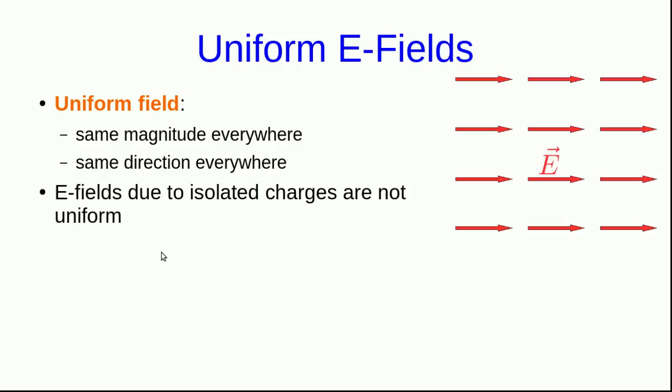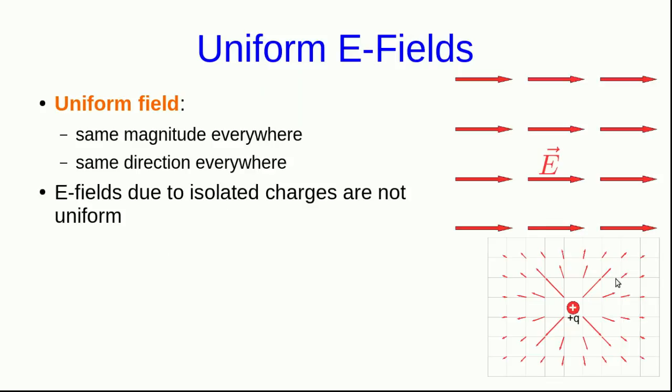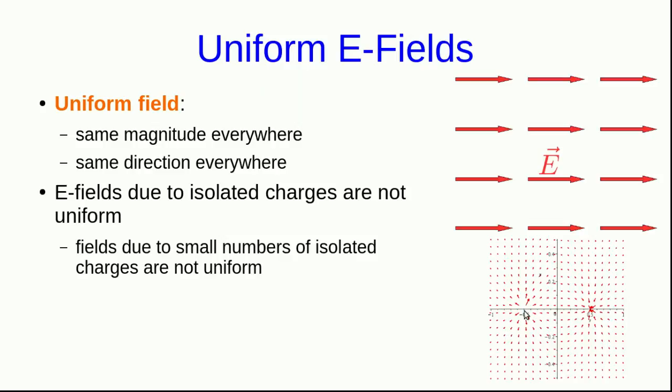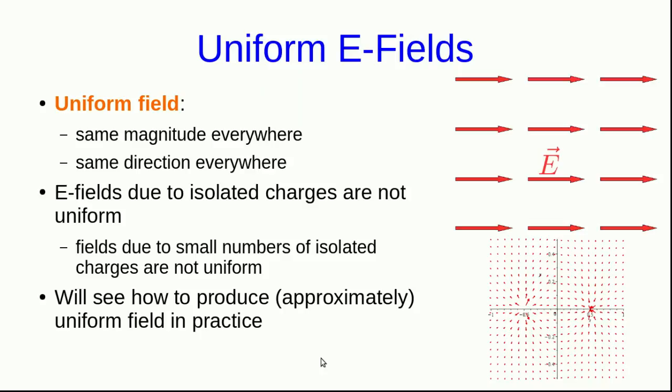The E fields that we've seen, which are caused by isolated charges, are not uniform. For example, the field due to a positive charge, which is certainly varying in magnitude and direction from place to place. And similarly, this field due to a positive charge here and a negative charge here is most certainly not uniform. But we will see how in practice we produce approximately uniform fields.